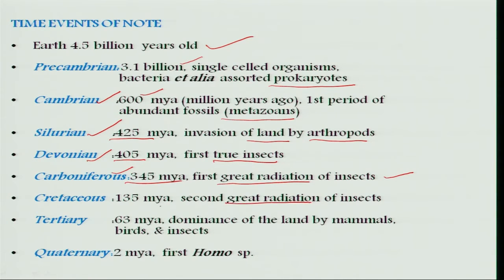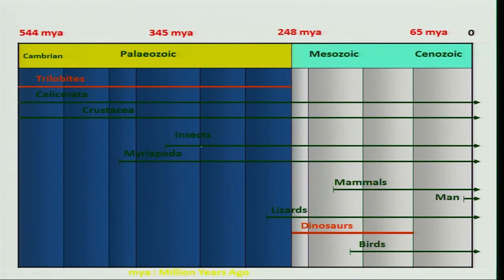At 345 million years ago, the first great radiation of insects occurred during the Carboniferous period. The second great radiation of insects happened at 135 million years ago during the Cretaceous period. In comparison, around 63 million years ago in the Tertiary period, mammals and birds began to dominate along with insects, and we human beings have only evolved since about 2 million years ago. This diagram also speaks about the evolution of insects in close relation to myriapods and crustaceans, their sister groups, starting around 400 million years ago.